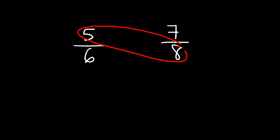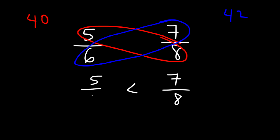Now for the sake of practice let's try another example. 5 over 6 and 7 over 8. Which one is greater? So let's cross multiply. 5 times 8 is 40. 7 times 6 is 42. 42 is greater than 40. So the fraction on the right is greater than the one on the left. So we could say that 7 over 8 is greater than 5 over 6.